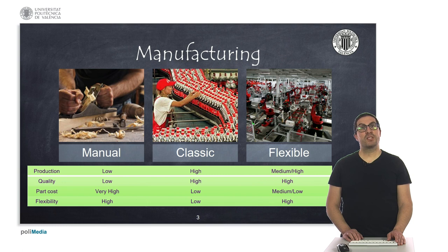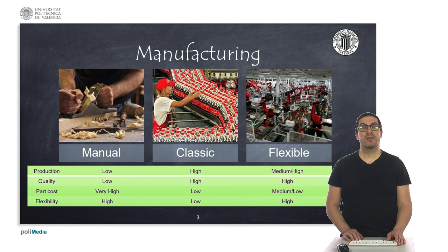Manufacturing processes can be classified into three categories, attending to aspects such as their production capacity, quality, part cost and flexibility. The selection of one manufacturing process or another will mostly depend on these aspects.